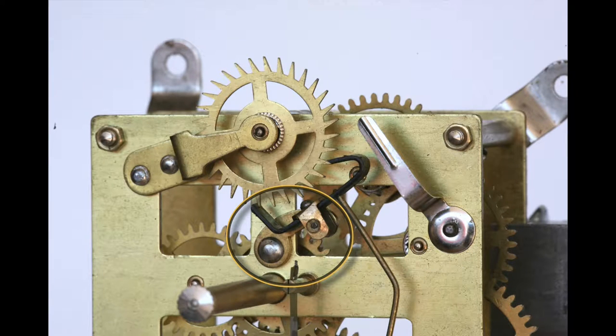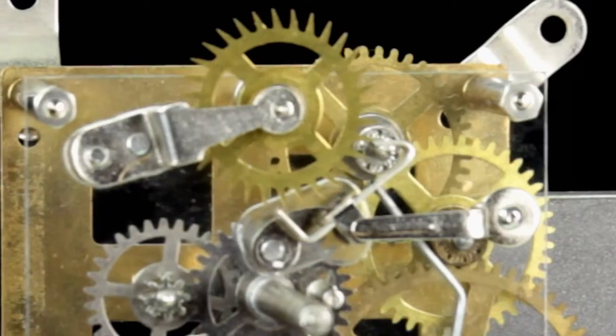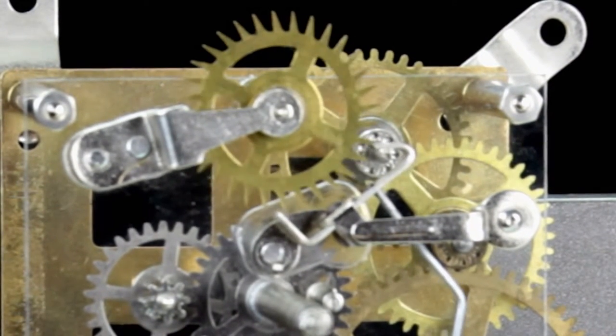This adjustable arm riveted to the front plate directly under the escape wheel holds the anchor assembly and is called the pallet cock. The anchor rocks back and forth on the pallet cock post, acting like a switch to control the release of power through the escape wheel.